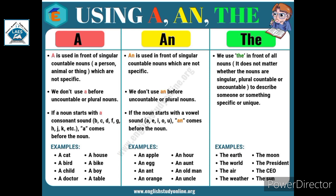यहाँ पे A है इसलिए AN: an egg, an ant, an orange, an HR. अब देखो यहाँ भले ही H है, बट sound किसका आ रहा है? R. हम इसको R प्रोनाउंस करते हैं, तो A जैसा sound पहला आ रहा है, इसलिए AN — an HR, an aunt, an old man, an uncle.